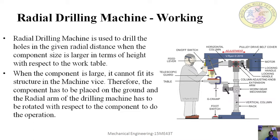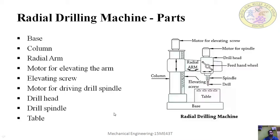When the component is large, it cannot fit within the table or work area. If the component is heavy and larger, we cannot accommodate the workpiece on the table. In that case, the component is placed on the ground, and the vertical radial arm is swung in any direction as needed. If the drilling surface is at a particular point, we swing the radial arm there and drill, lowering and positioning the arm with the help of the vertical column. The component is placed on the ground and the radial arm is rotated with respect to the component to perform the operation.